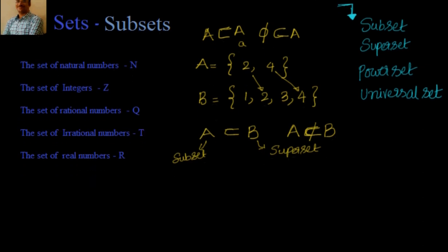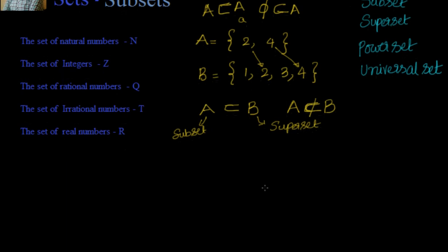Now we have seen what are the subsets you can have. Suppose I take A equal to 2 comma 4. What are the subsets I can have? I can have empty set, nothing in it. Then I can have 2, that is one set with only one element. Then I can have 4, that is another element. Then I can have A itself, that is nothing but 2 comma 4. So you can see how many I can have? 1, 2, 3, 4.